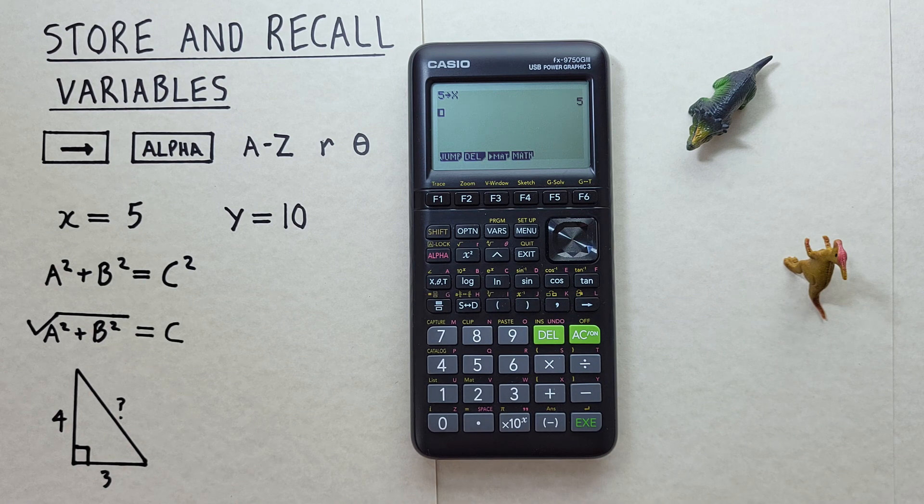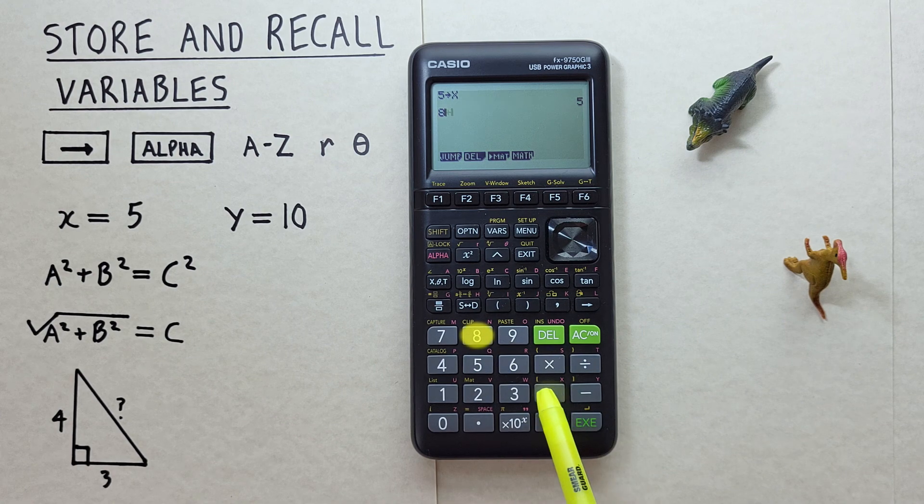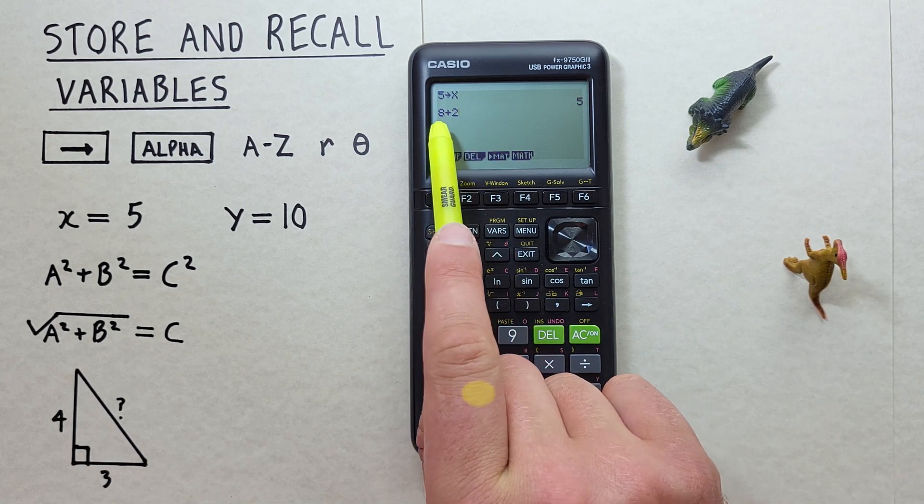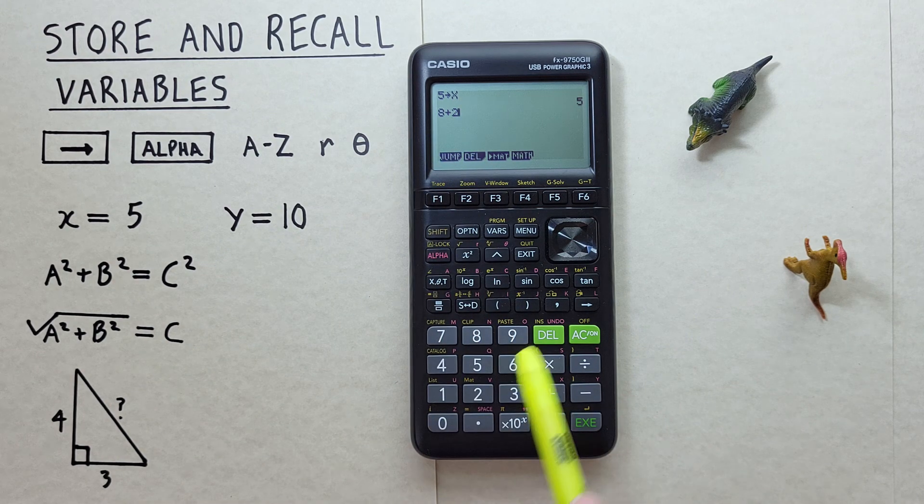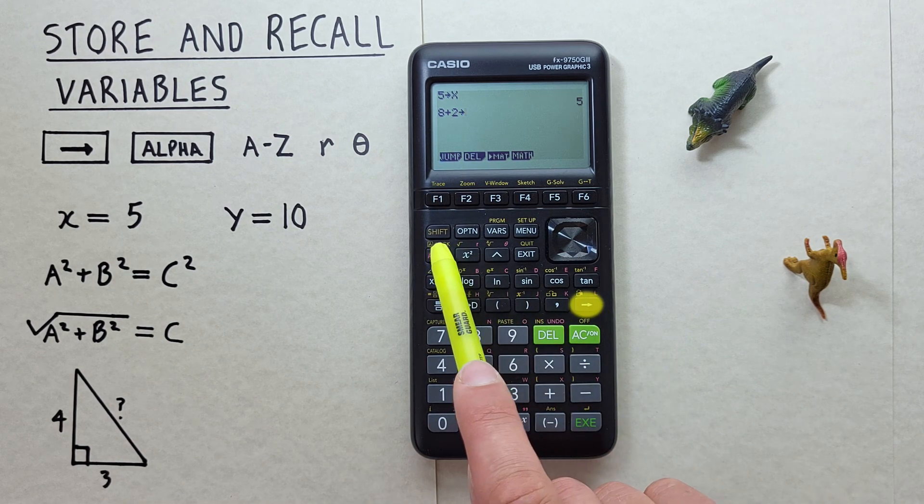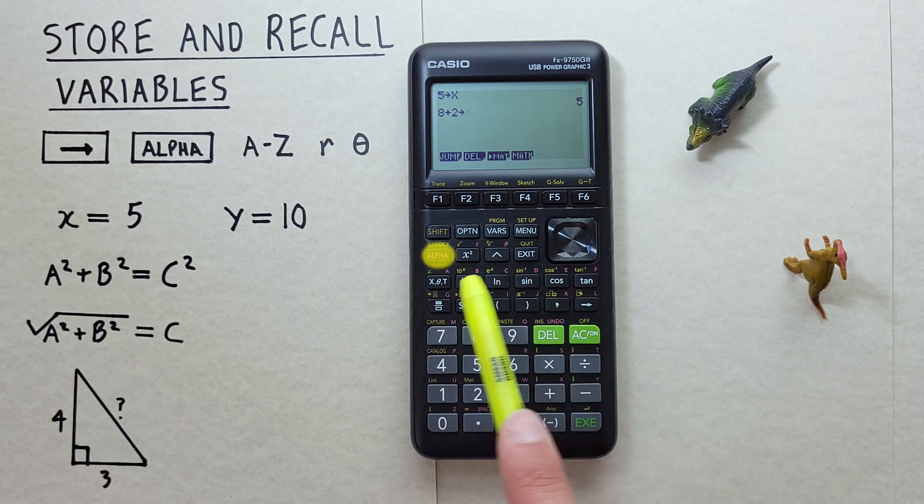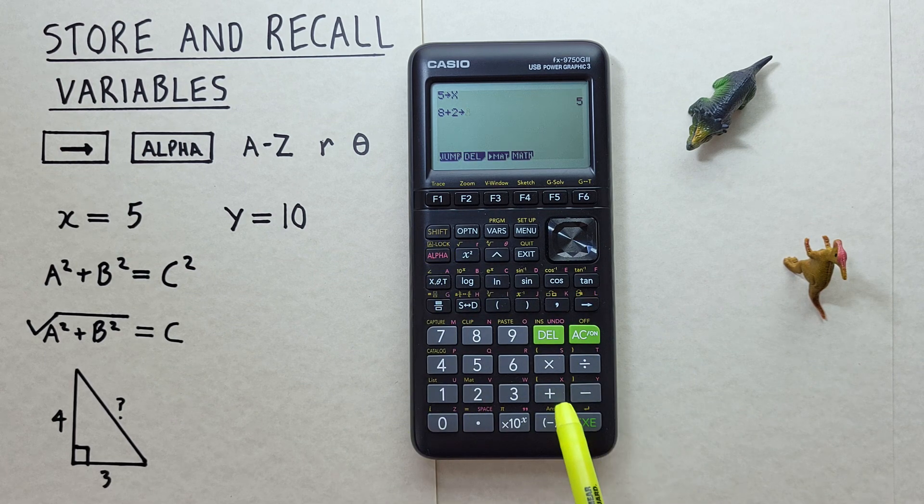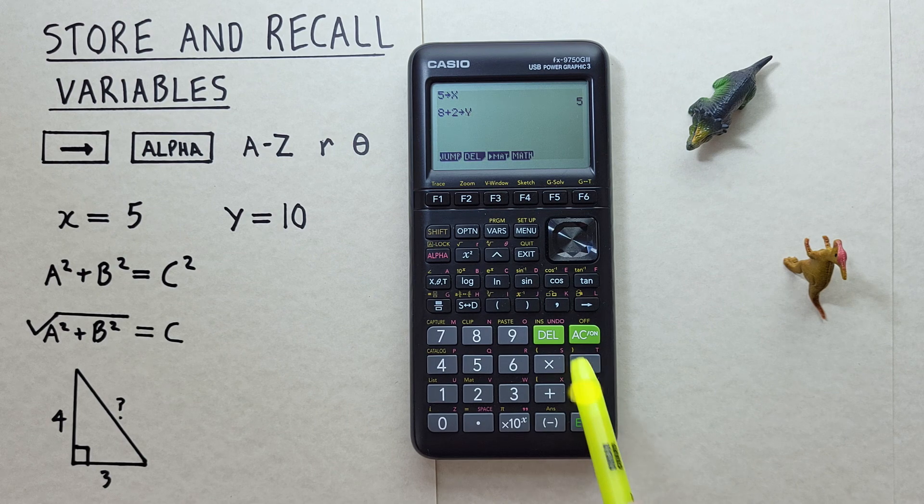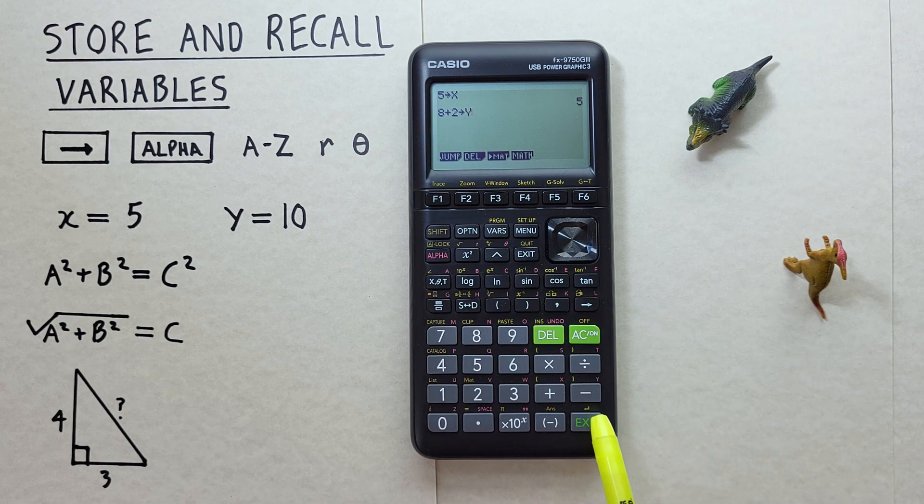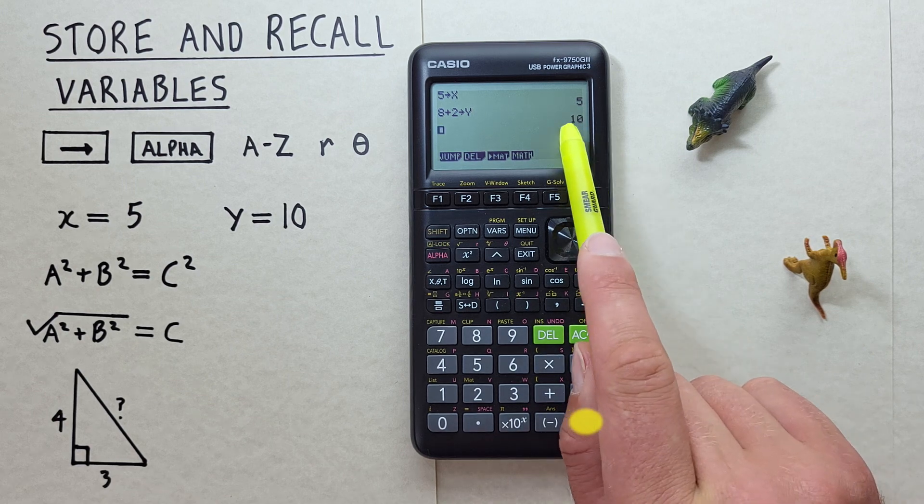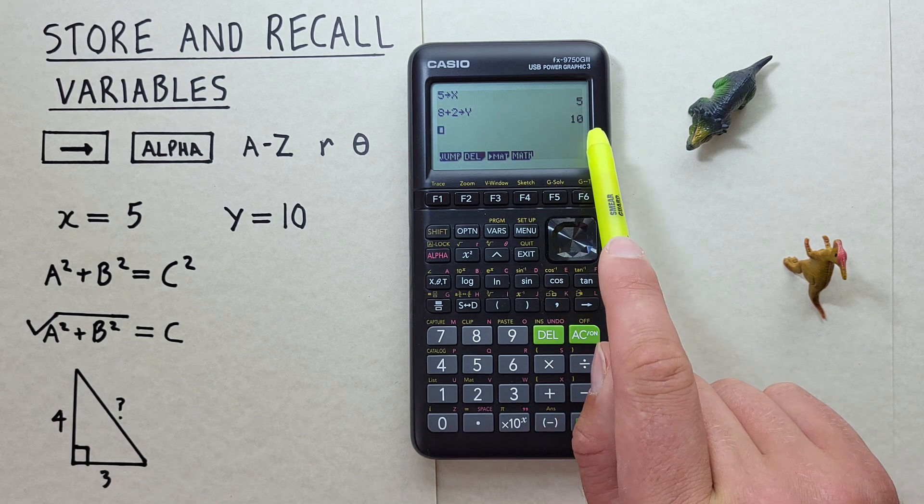We can also store the result of calculations. Let's say we did 8 plus 2 and wanted to store the result of that as Y. To do that, we press the arrow key and then the alpha, and then choose the Y memory slot, which is down here at the subtraction key. 8 plus 2 into Y, we press EXE, and that gives us 10 stored as Y.